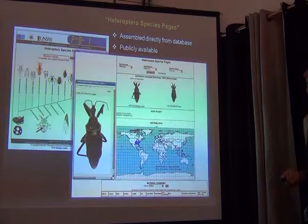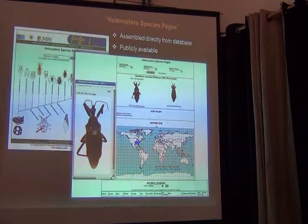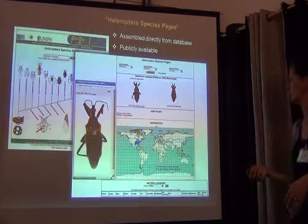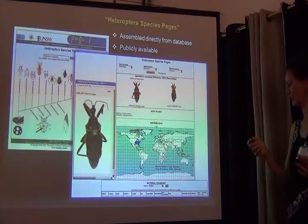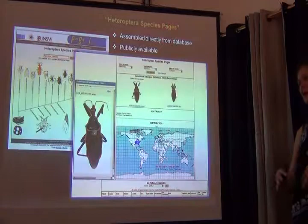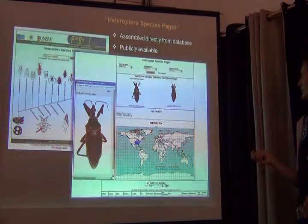Just quickly, some of the outputs. By now we assemble what we call heteroptera species pages, where you see distribution maps, all the images uploaded for a particular species, and the material examined section that you can also download as a spreadsheet. This is publicly available, which is a good or maybe a bad thing. The database was really a research database, which means a lot of work in progress — species being described or still not described — were entered in it. So obviously other people can see this information too, which is a bit of a contentious topic.